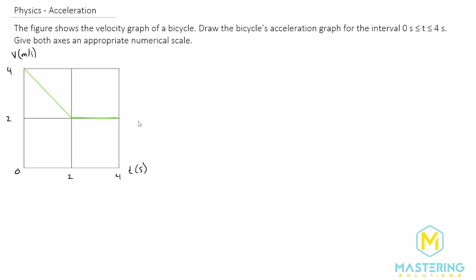Welcome to Mastering Solutions. They give us a velocity versus time graph in this question and they want us to take that and turn it into an acceleration versus time graph. When we look at the graph we can see there are two distinct sections: a constant velocity from 0 to 2 seconds, and then 2 to 4 seconds has another consistent velocity.